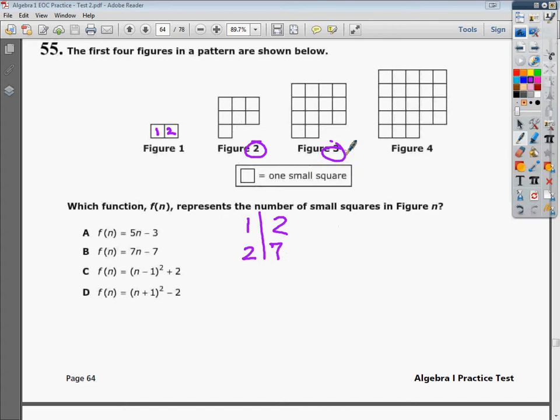For the next one, figure three has one, two, three, four, five, six, seven, eight, nine, ten, eleven, twelve, thirteen, fourteen in it. So three and fourteen. That's terribly drawn. And then figure four.